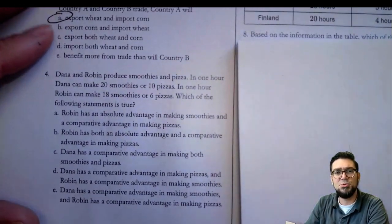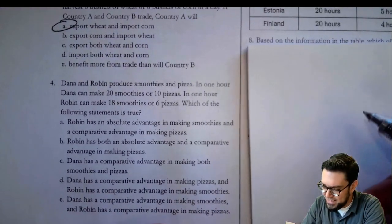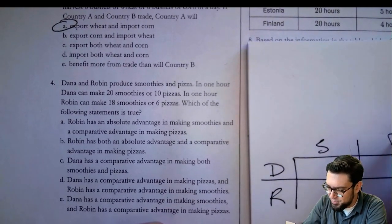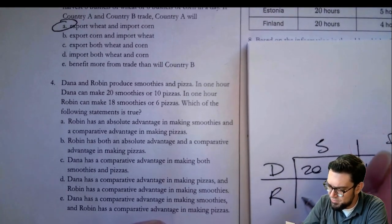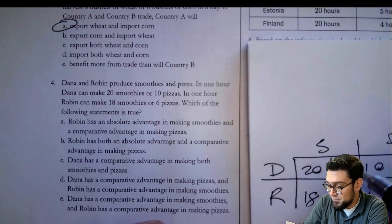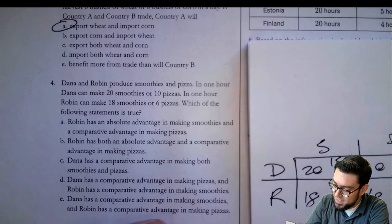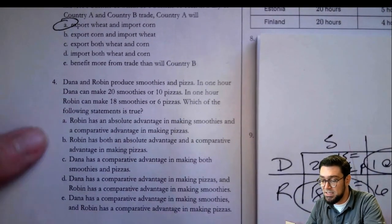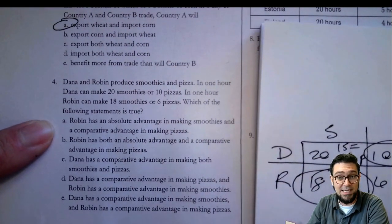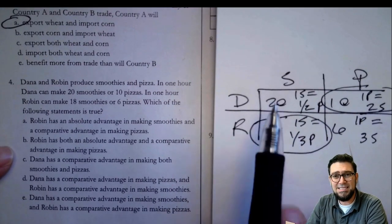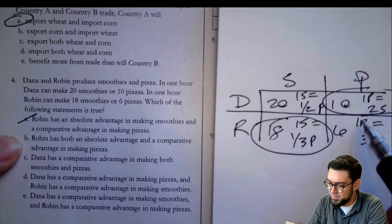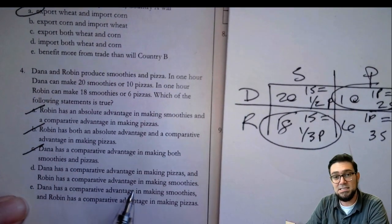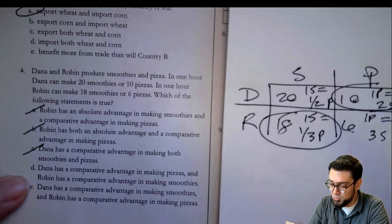Question four: Dana and Robin produce smoothies and pizzas in an hour. Dana can make 20 smoothies or 10 pizzas. Robin can make 18 or 6. For Dana, one smoothie equals one-half of a pizza and one pizza equals two smoothies. For Robin, one smoothie equals one-third of a pizza and one pizza equals three smoothies. So Dana has comparative advantage in pizzas and Robin in smoothies. Robin does not have absolute advantage in smoothies — 18 is less than 20. You can't have comparative advantage in both goods. Dana has comparative advantage in pizzas and Robin has it in smoothies. The answer is D.